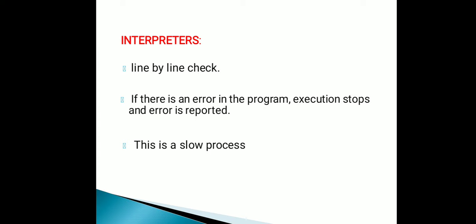When an error is found, it stops and reports the error for debugging. Debugging is for correction — when you find the error in a particular line, the developer needs to fix it. This is a slow process and consumes high memory. The interpreter is also required to execute the correct code along with reporting the error.